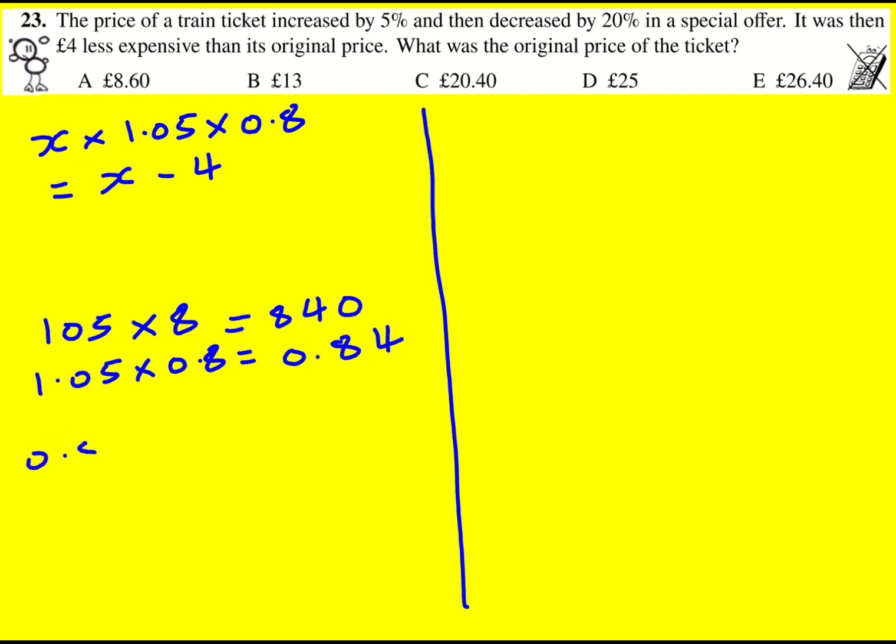So I've got 0.84x is equal to x minus 4. And now I can subtract it from both sides and add 4 to both sides. And that's going to leave me with 0.16x is equal to 4.